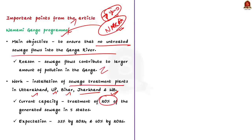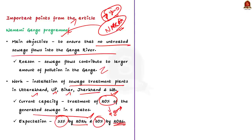The installed sewage treatment plants are capable of treating only 20 percent of the total sewage generated in these five states. The Namami Ganga program was launched in 2014 and nine years have passed, yet only 20 percent of the generated sewage is treated; the rest 80 percent is left into the Ganga untreated. However, officials say sewage treatment is expected to increase to about 33 percent by 2024 and 60 percent by 2026.